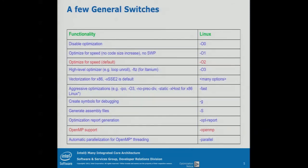So all the well-known compiler flags — for optimization, for vectorization, for aggressive optimization, for debugging, for getting the assembly code, for OpenMP support, for report generation, optimization report, and vectorization report — everything is exactly the same. That's important to understand. You can basically read the manual or those slides to get the most important information.